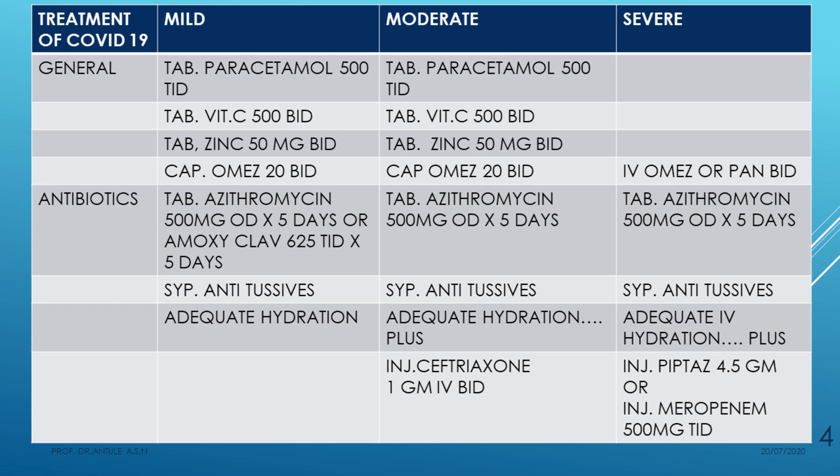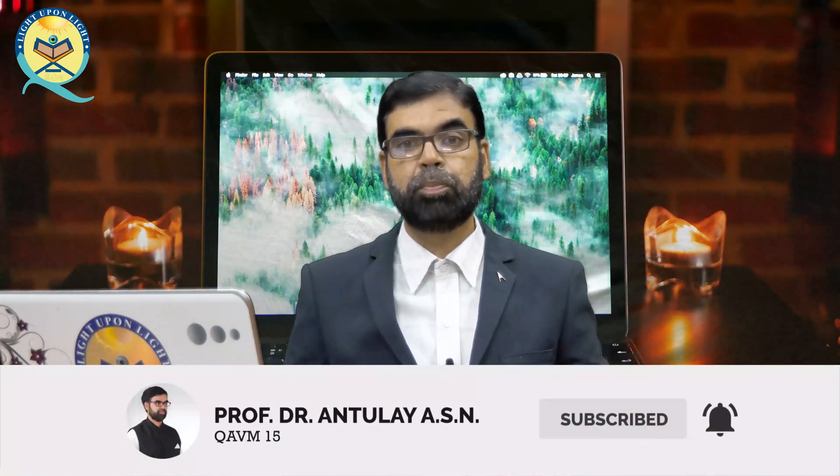Azithromycin 500 mg OD is given in mild cases for five days. If the patient is sensitive to azithromycin, give amoxicillin-clavulanate 625 mg BD or TID for five days. In moderate cases, all mild treatments apply, and if there is risk of secondary bacterial infection or pneumonia, add IV ceftriaxone 1 gram BD for five days.